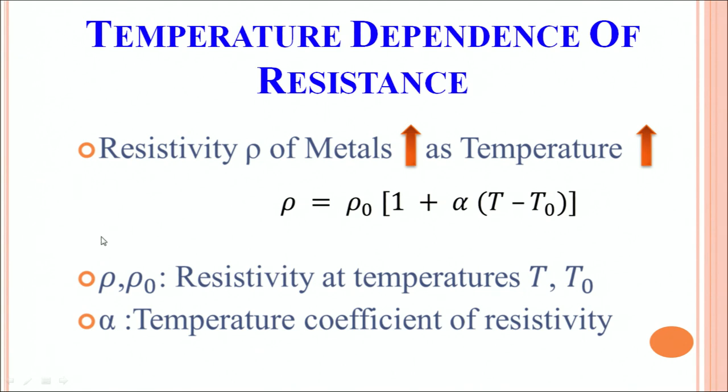Now, the value of the resistance varies with temperature. We have already discussed earlier about resistivity of a metal, which is a characteristic of the metal. Resistivity of the metal, ρ, this increases as the temperature increases. In a mathematical form, the relationship can be written like this: ρ = ρ₀[1 + α(T - T₀)]. What is ρ₀? The resistivity at temperature T₀. T₀ basically signifies the absolute zero temperature, and ρ is the resistivity at temperature T.